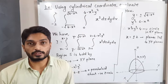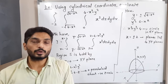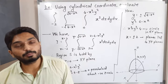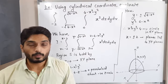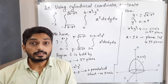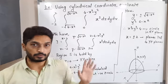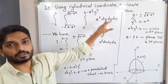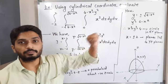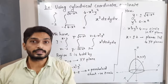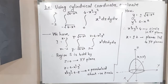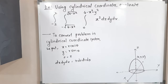Now we have understood the region of integration. To convert to cylindrical coordinates, we put x = r·cosθ, y = r·sinθ, and z = z as it is. The volume element transforms as dx·dy·dz = r·dz·dr·dθ.